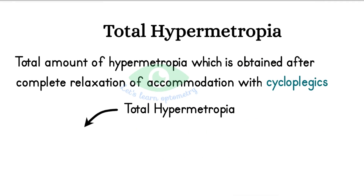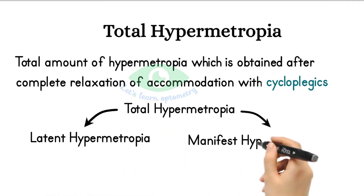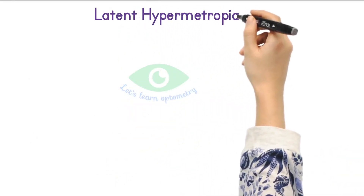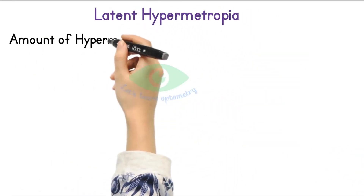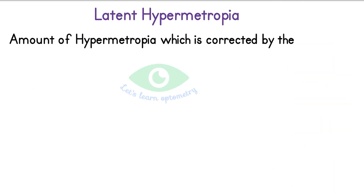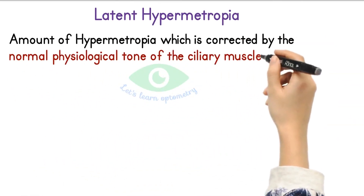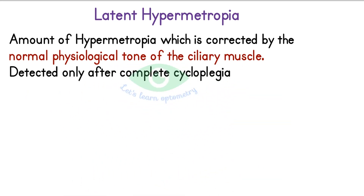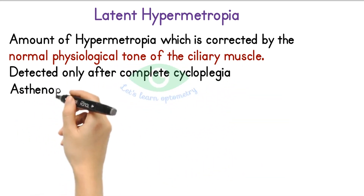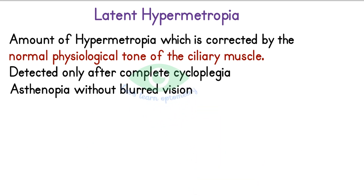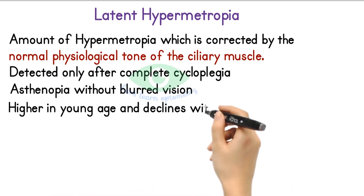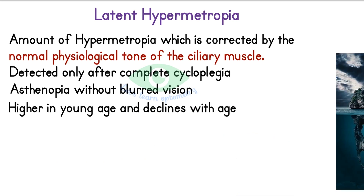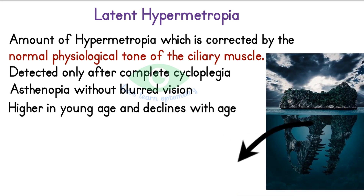Total hypermetropia is divided into latent hypermetropia and manifest hypermetropia. Latent hypermetropia is the amount of hypermetropia which is corrected by the normal physiological tone of the ciliary muscle. It is detected only after complete cycloplegic refraction. It causes asthenopic symptoms without causing blurred vision, and it is strong in youth and slowly declines with age.